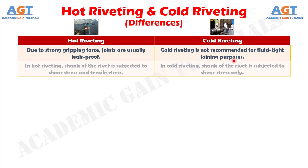Number 7: in hot riveting, the shank of the rivet is subjected to both shear stress and tensile stress. Whereas in cold riveting, the shank of the rivet is subjected to shear stress only.